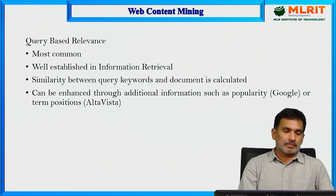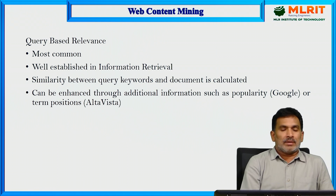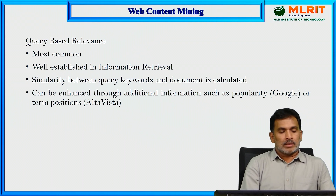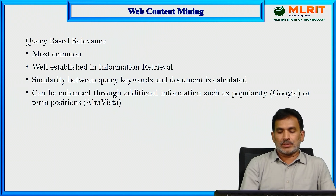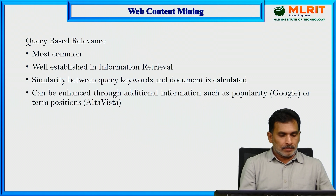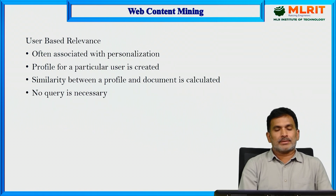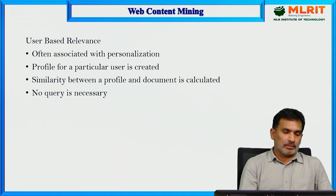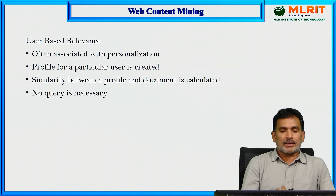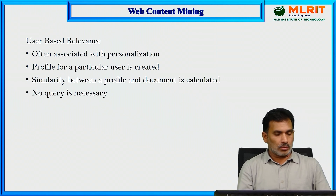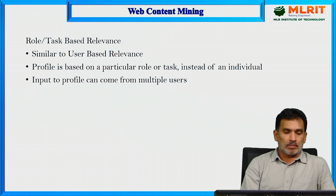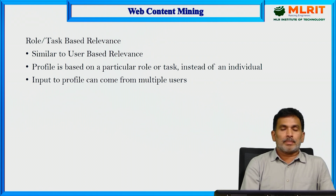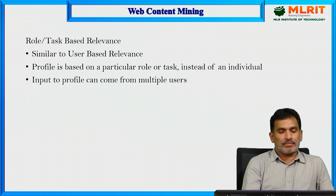Query-based relevance is the most common type in information retrieval — similarity between the query keywords and the document is calculated and can be enhanced through additional information such as popularity or term positions. User-based relevance is associated with personalization: a profile for a particular user is created and similarity between the profile and a document is calculated, with no query necessary. Role or task-based relevance is similar, but the profile is based on a particular role or task rather than an individual, and input to the profile can come from multiple users.